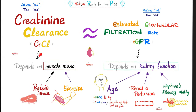What does creatinine clearance depend on? It depends on your muscle mass, which depends on exercise — especially vigorous exercise — which can raise creatine phosphate and creatinine. It also depends on protein intake. If I eat tons of meat before going to the lab, you'll find higher creatinine clearance, giving the illusion that my GFR is super normal. But if you wait, my GFR will come back down to normal.